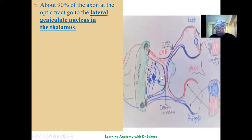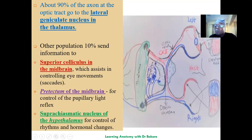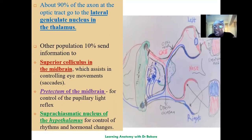Ninety percent of the axons running from the optic tract go to the lateral geniculate nucleus. The remaining 10% terminate in three other regions: the suprachiasmatic nucleus in the hypothalamus, the superior colliculus in the midbrain, or the pretectum of the midbrain. Fibers going to the superior colliculus assist in controlling eye movement, fibers to the pretectum allow for the pupillary light reflex, and the suprachiasmatic nucleus helps control hormonal changes.